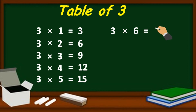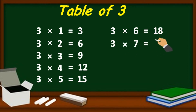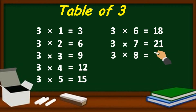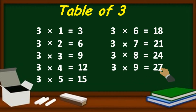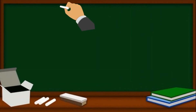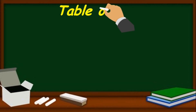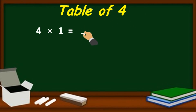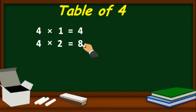3 six's are 18, 3 seven's are 21, 3 eight's are 24, 3 nine's are 27, 3 ten's are 30.